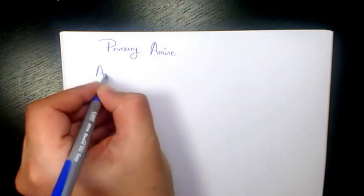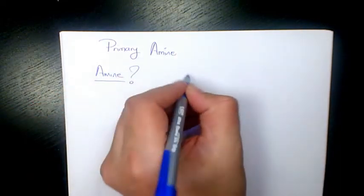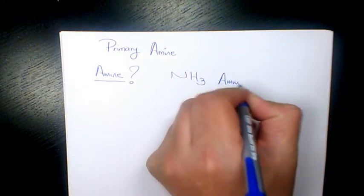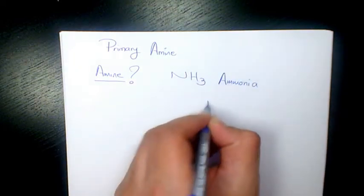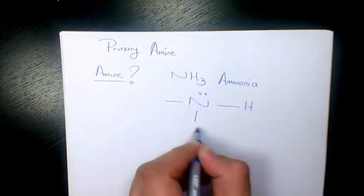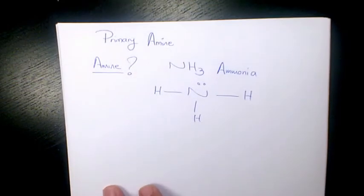So first of all I'm going to say what is amine. Amine is coming from ammonia and ammonia as you see here is a nitrogen atom connecting to three atoms of hydrogen.